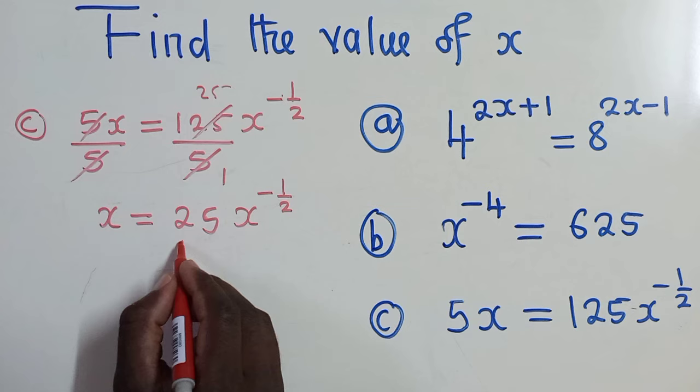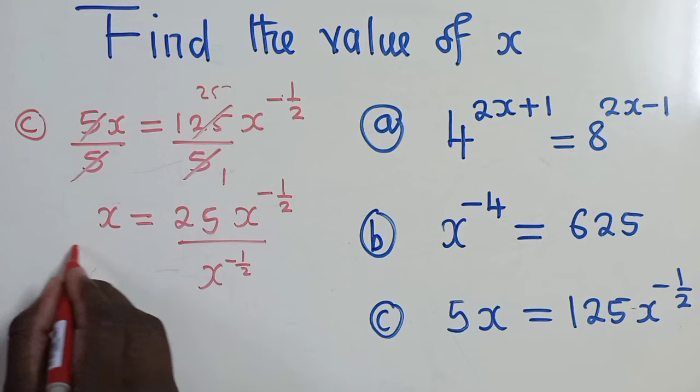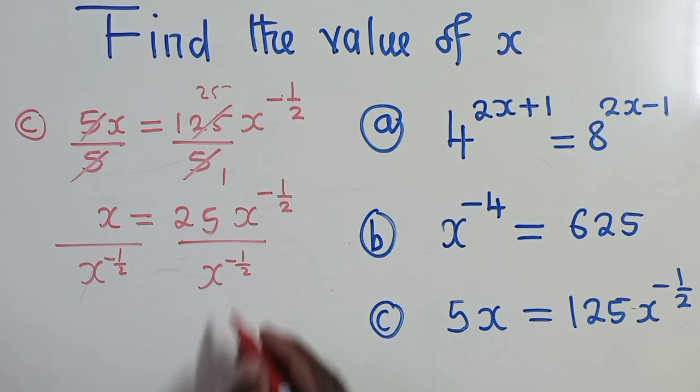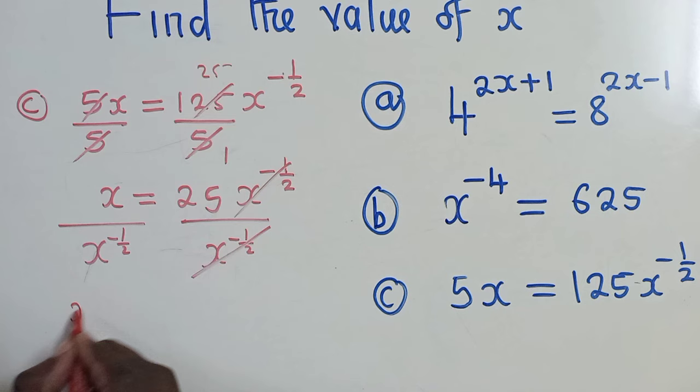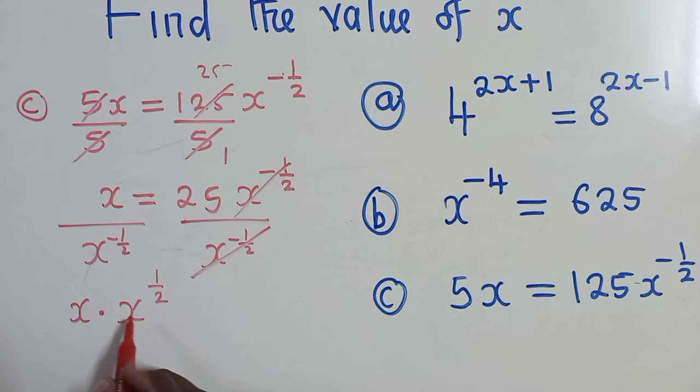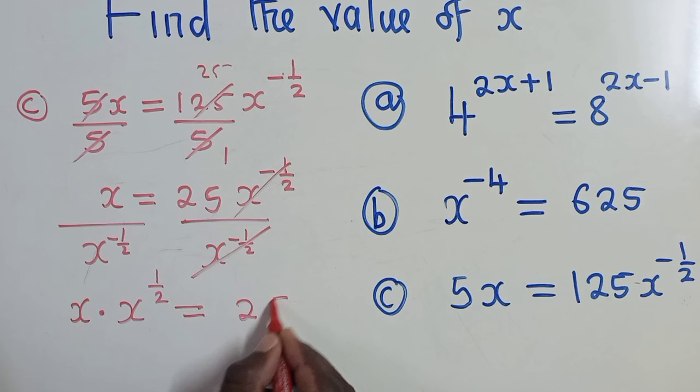The next thing is to divide by x power negative 1 over 2. Even here, divide by x power negative 1 over 2. Okay, so this side will cancel. This other side, using the laws of indices, we shall have something like this. We get rid of the negative power. So this is what we are going to have, which is equal to 25.